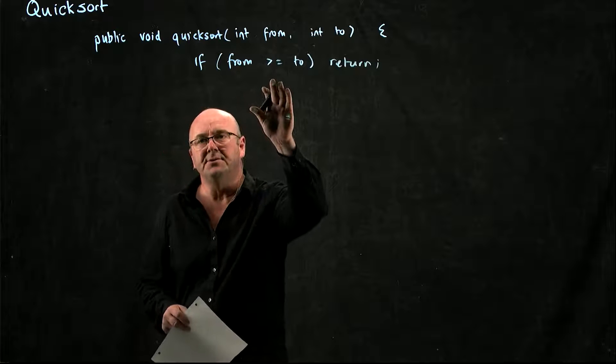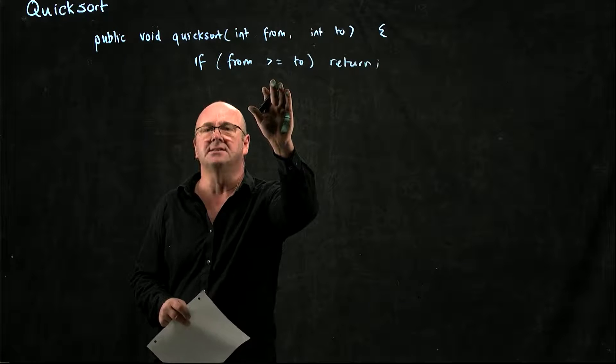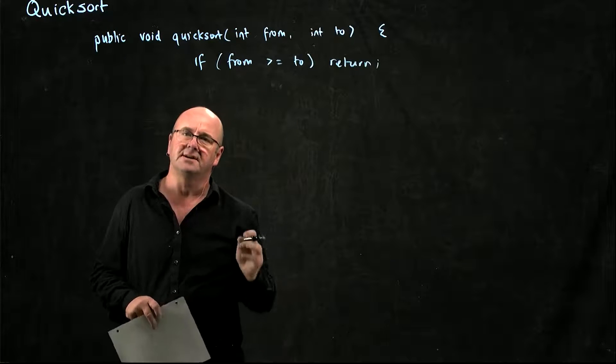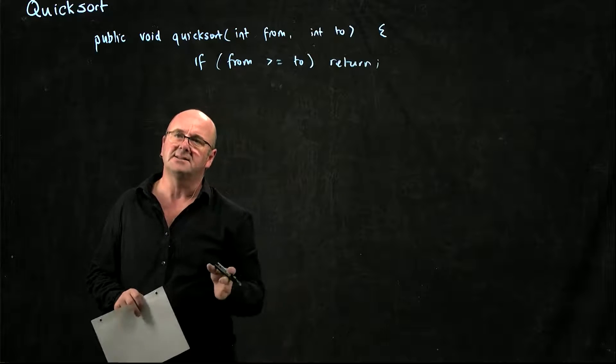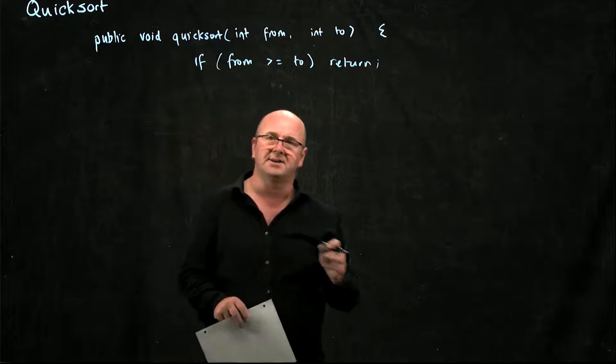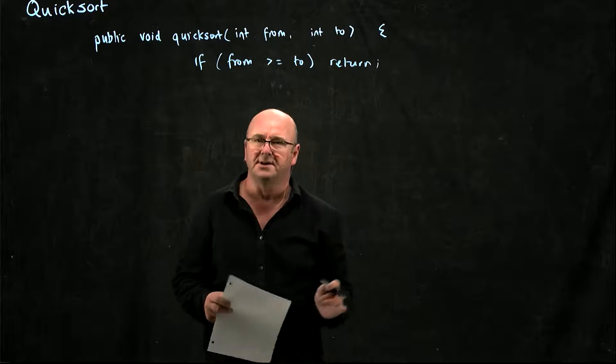If that's true, we have a single element list. A single element list is already sorted — the smallest thing is at the beginning and the largest thing is at the end. It's already sorted.